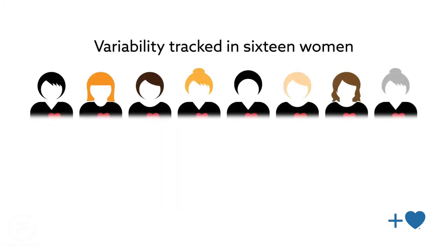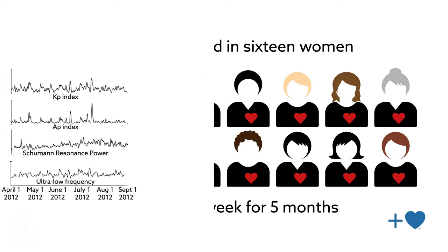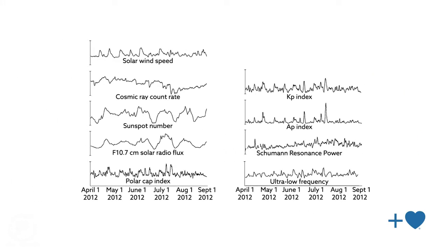This variability was tracked in 16 women who wore heart rate monitors for 72 hours per week for 5 months. The data were then compared to changes in cosmic rays as well as geomagnetic and solar activity occurring over the same period.